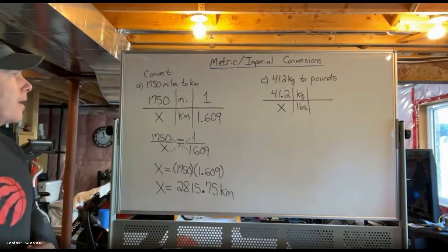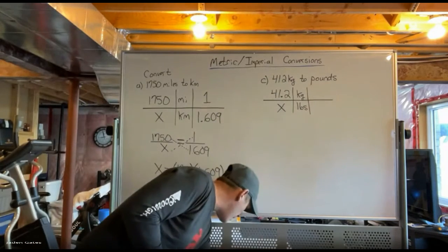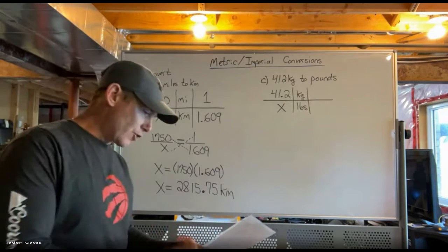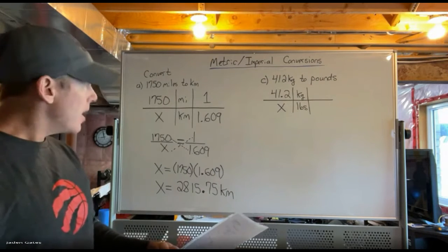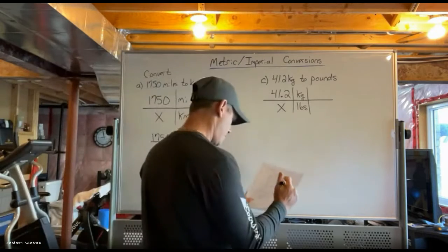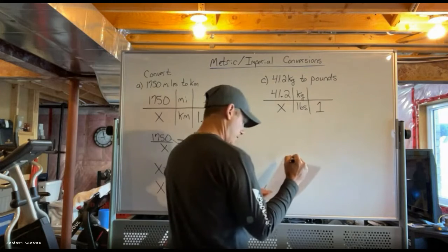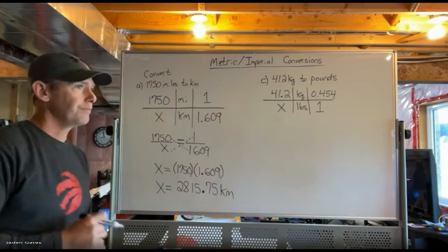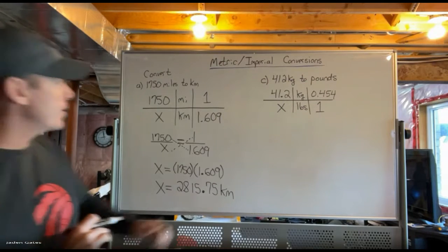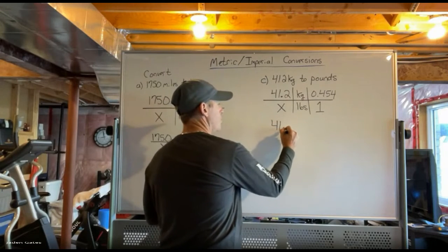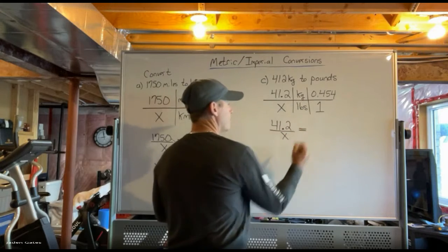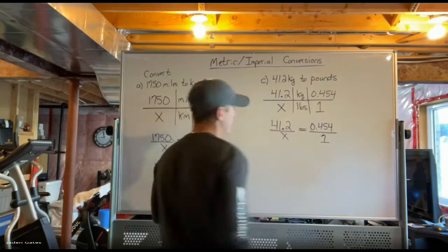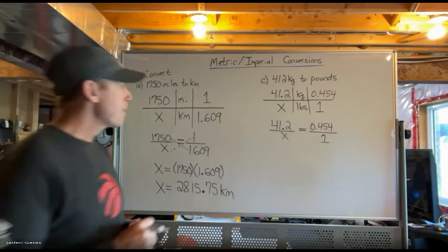I don't know how many pounds that is. Going to my conversion sheet, I need to find the relationship between kilograms and pounds. I go to the mass section and it says one pound is 0.454 kilograms. I make sure I get things in the right spot, then set up my equation: 41.2 over x equals 0.454 over 1. Again it's a fraction equaling a fraction.